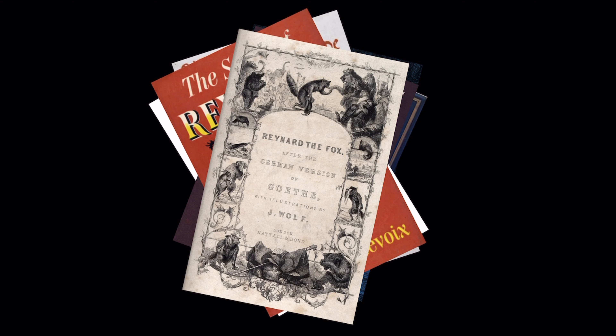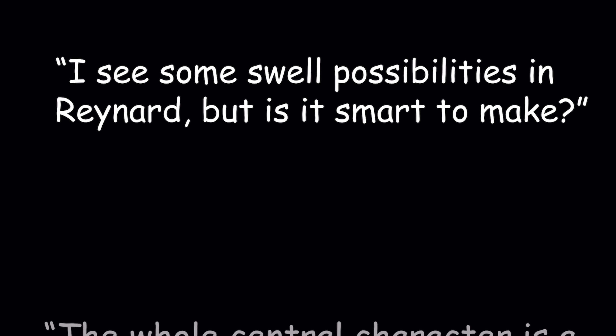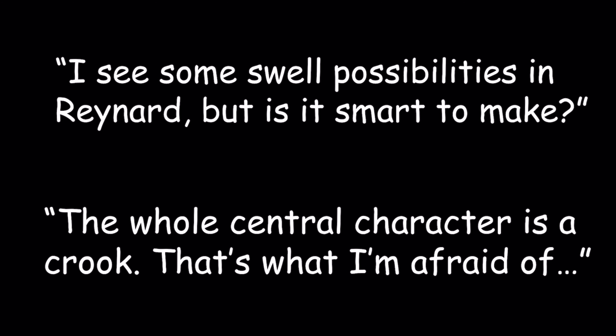The fact that the story was in public domain appealed to Walt. Reynard was put into story development in 1937 with Walt assigning writers Al Perkins and Dorothy Blank to create a story treatment. However, when the treatment was presented in a meeting at the Disney Studios with Walt, Bill Cottrell, Ben Sharpsteen, and Arthur Langdon on February 12th, 1948, it appeared to adhere too closely to the original stories. Walt said, 'I see some swell possibilities in Reynard, but is it smart to make it? The whole central character is a crook. That's what I'm afraid of.'